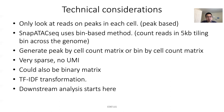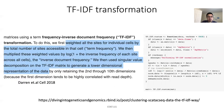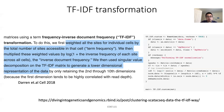The downstream analysis starts from this sparse matrix. TF-IDF, or term frequency–inverse document frequency transformation, was first used in Darren et al. 2018 in Cell. They used this TF-IDF transformation to normalize the single-cell ATAC-seq data.